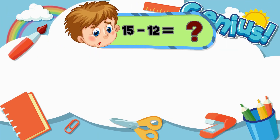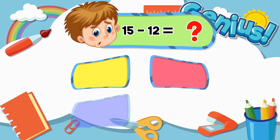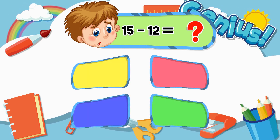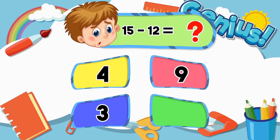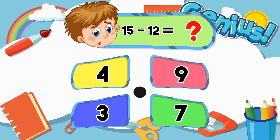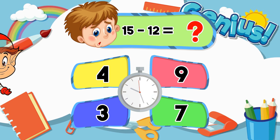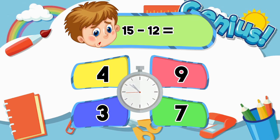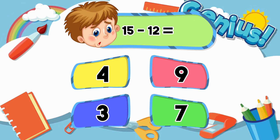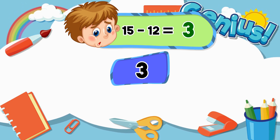What is fifteen minus twelve? Four, nine, three, seven, two. Ten, three, one.